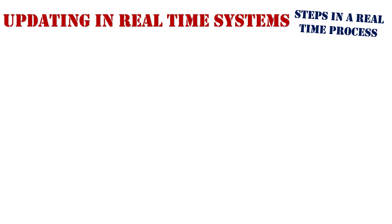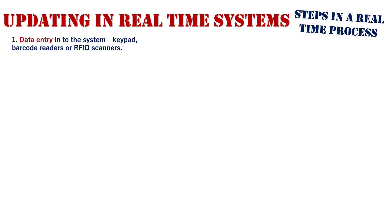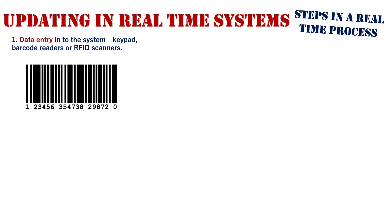Let's illustrate a real-time process and the process of updating it. Here is a real-time system — let's say it is some sort of point-of-sale system. Products would be scanned first, and data entry occurs through a keypad, barcode readers, or RFID scanners. We're going to look at it in the context of a barcode on a product. We scan that barcode, and the data — the numbers at the bottom of that barcode — goes into the system.